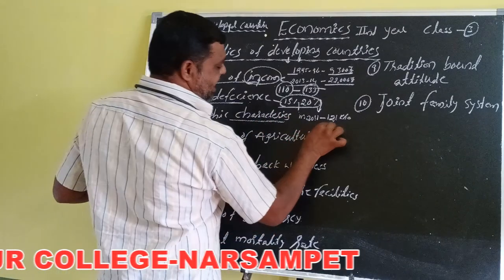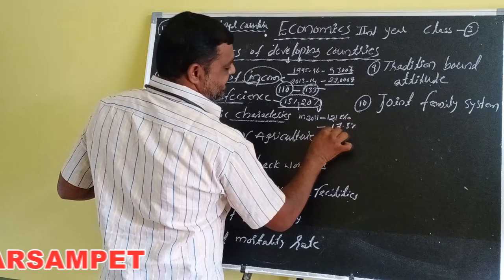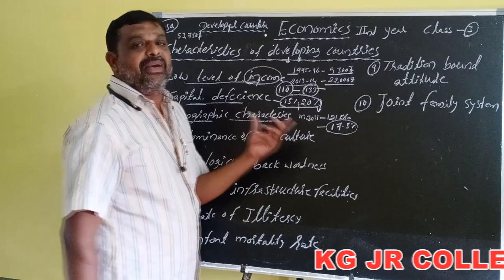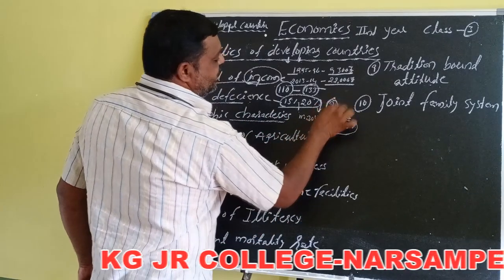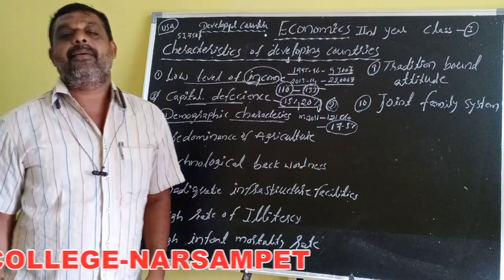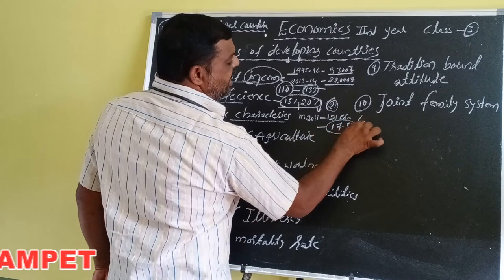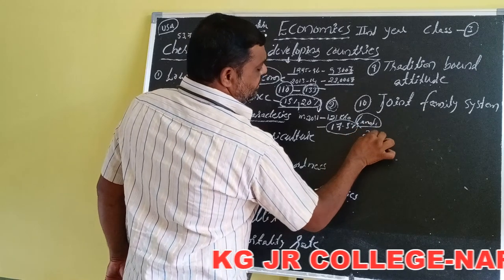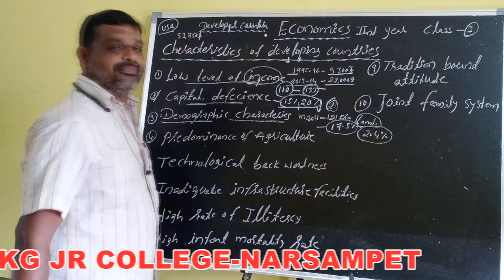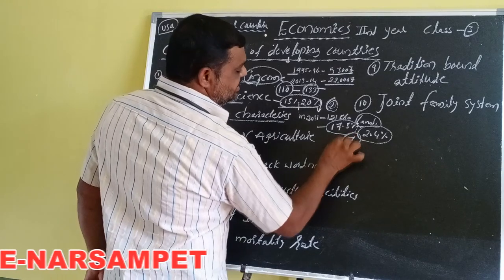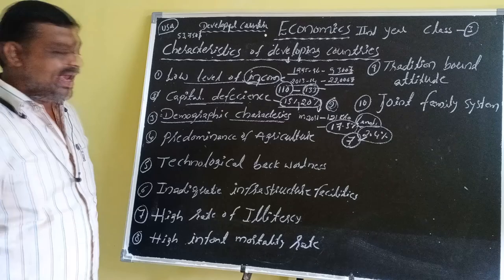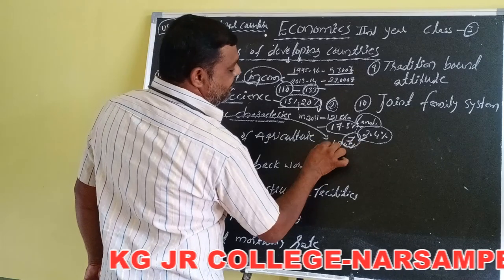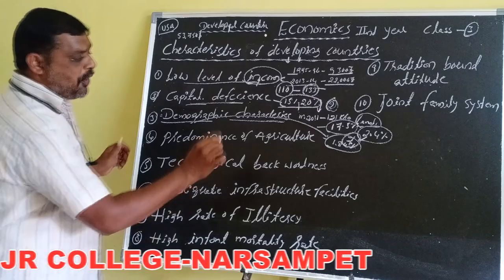India accounts for 17.5% of the world's population. In worldwide ranking, India holds the second place after China. India's land area is 2.4% of the world's total land area, ranking 7th worldwide. The population growth rate in India is 1.84% per annum.